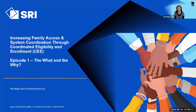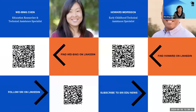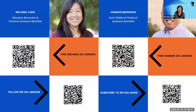Hi everyone and welcome to this video series about increasing family access and system coordination through coordinated eligibility and enrollment, or CEE. This is the first of three episodes and today we're going to talk about the what and the why of CEE. My name is Wei-Bing Chen and this is my colleague Howard Morrison. To learn more about us you can scan the QR code or connect with us on LinkedIn. You can also follow SRI on LinkedIn and subscribe to SRI EDU News by scanning the QR code.